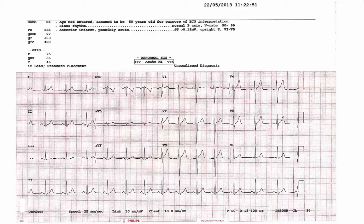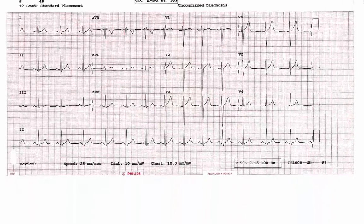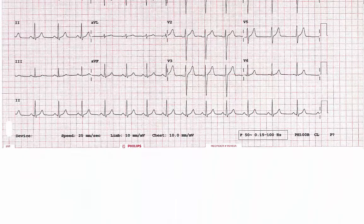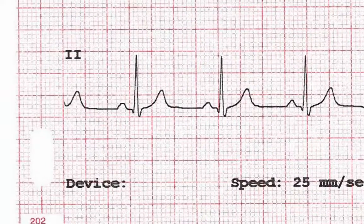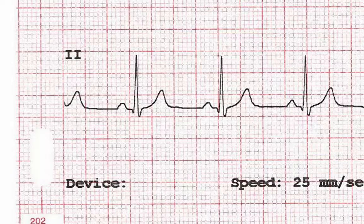Now, let's run step by step through the process of interpreting the ECG. Firstly, we'll calculate the patient's heart rate. This is usually best done from the rhythm strip, and there are two ways of doing it. When a patient's heartbeat is regular, one can estimate the heart rate from the distance between any two adjacent heartbeats.